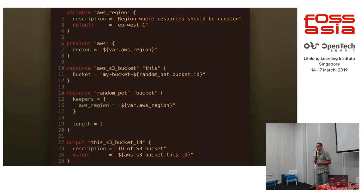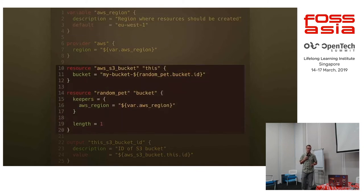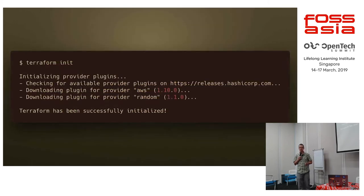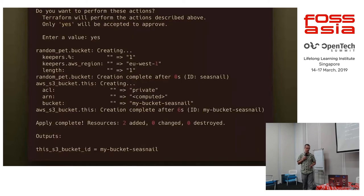A Terraform configuration file usually looks like this. In this example, we have a block AWS region where we specify a variable and a couple of resources we want to create. After running commands like Terraform init, we download dependencies like a provider of a specified version. Then we run Terraform apply and it actually creates the resources we want. In this case we are creating an S3 bucket, and we can see the last line confirms it has been successfully created.